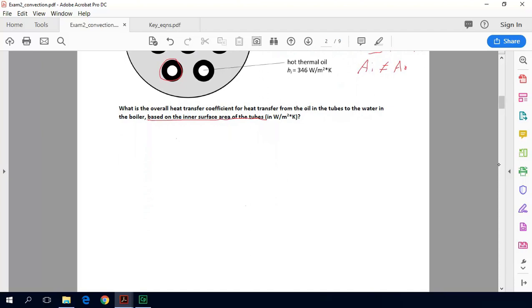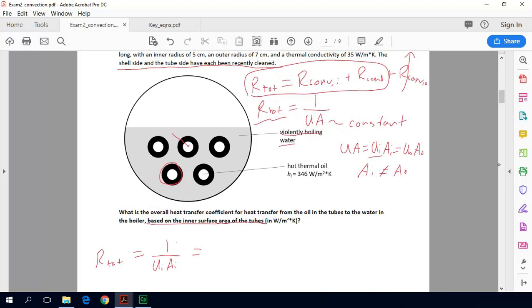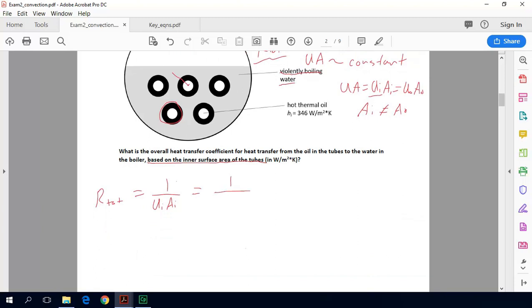We get R_total, which also equals 1 over U_i times A_i, equals the convective thermal resistance plus the conductive thermal resistance. Our convective thermal resistance is just 1 over h_i times A_i. Our conductive thermal resistance is not just L over k, and the reason for that is we have a radial system.